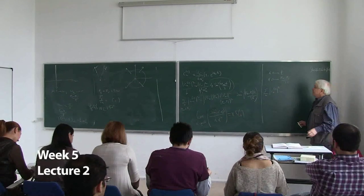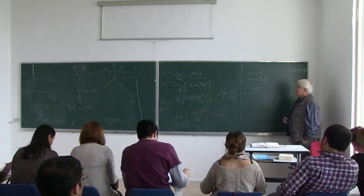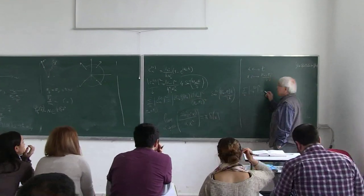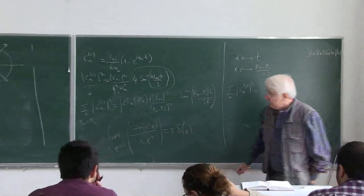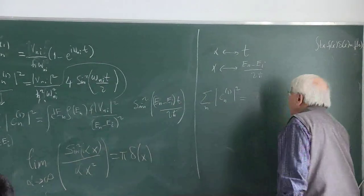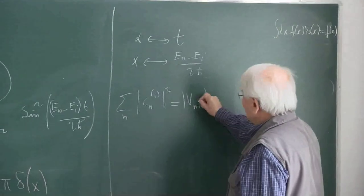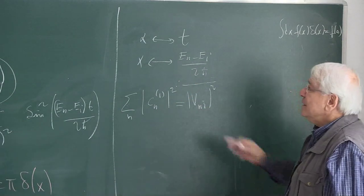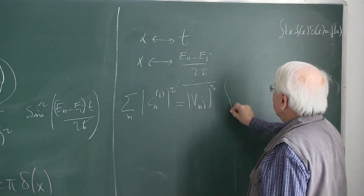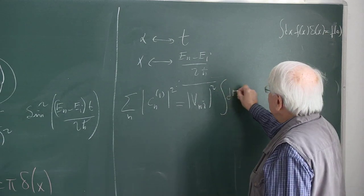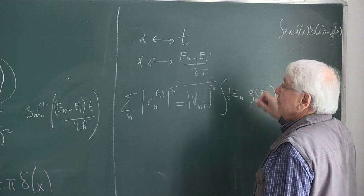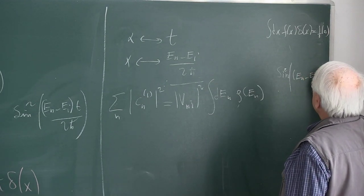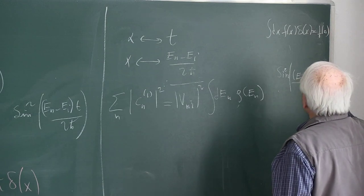Let me rewrite this a little slowly because it's not a simple matter. First of all, I replace this with the average and move out. That notation says it is the average over all the final end states. And what is remaining — let me write the remaining part: d·En·ρ(En)·sin²[(En - Ei)/2ħ].